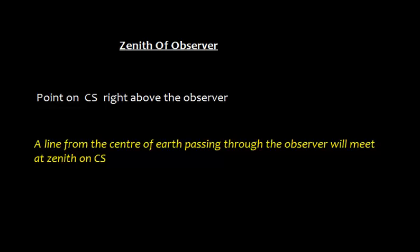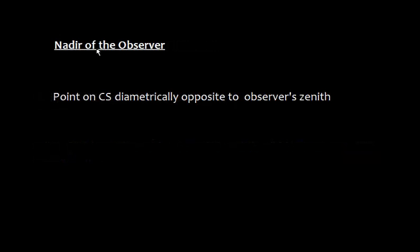In this video I am going to discuss about the observer-centric system. The first thing is the zenith of the observer — this is the point on the celestial sphere right above the observer. We also have the nadir of the observer, which is the point on the celestial sphere diametrically opposite to the observer's zenith.